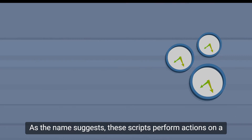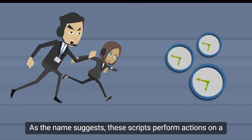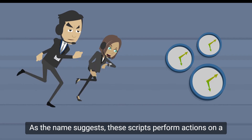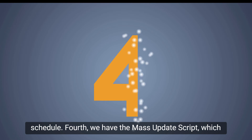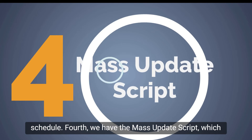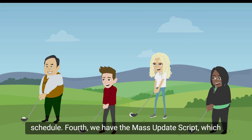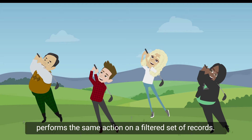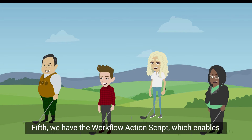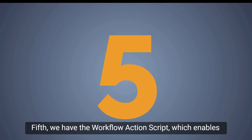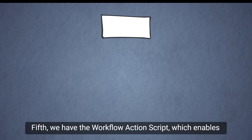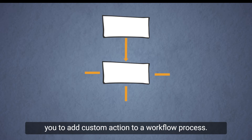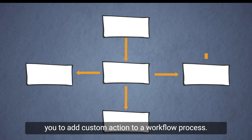Third is the Scheduled Script. As the name suggests, these scripts perform actions on a schedule. Fourth, we have the Mass Update Script, which performs the same action on a filtered set of records. Fifth, we have the Workflow Action Script, which enables you to add custom actions to a workflow process.